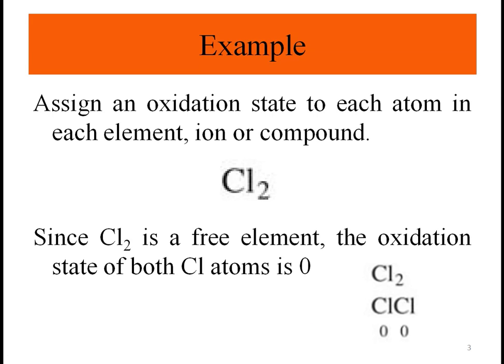Let's assign an oxidation state to each atom in the following examples. First, Cl2: since Cl2 is a free element, the oxidation state of both Cl atoms is zero. We have two atoms of Cl and it's a free element, so the oxidation state is zero.